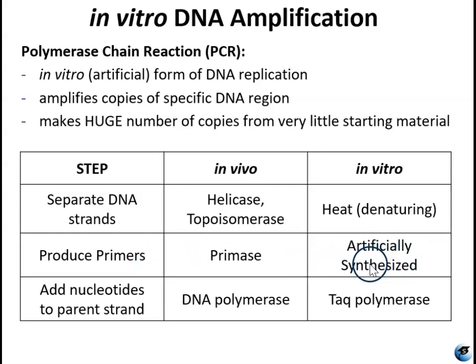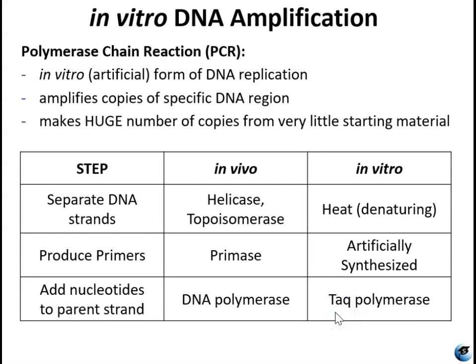As for making primers, you can actually synthesize them in a lab. If you have a target region of DNA, you can synthesize a single strand of adenines, thymines, cytosines, and guanines that are complementary to the strand of DNA you are targeting. For adding nucleotides to the parent strand, we use Taq polymerase — T-A-Q — named from the bacteria from which it was isolated, Thermus aquaticus, which lives in hot springs. It has a DNA polymerase that can tolerate high temperatures, which is needed because of the heating step used to separate the strands.